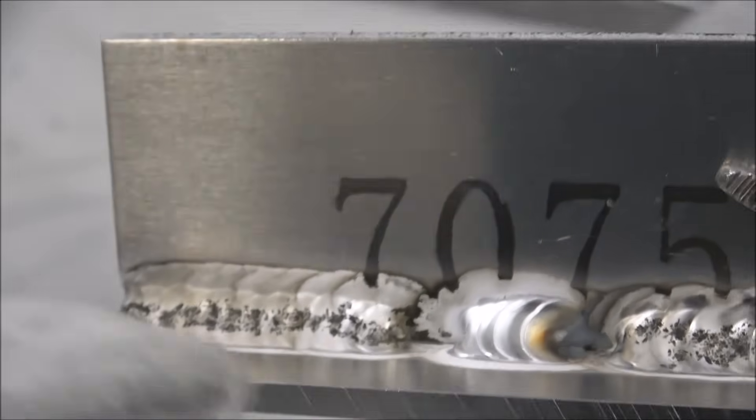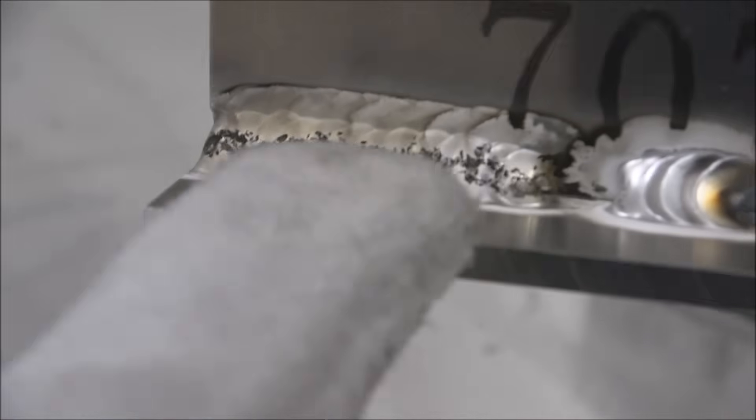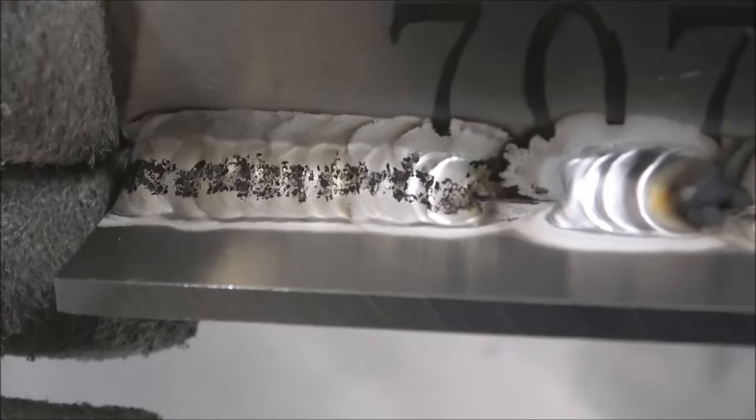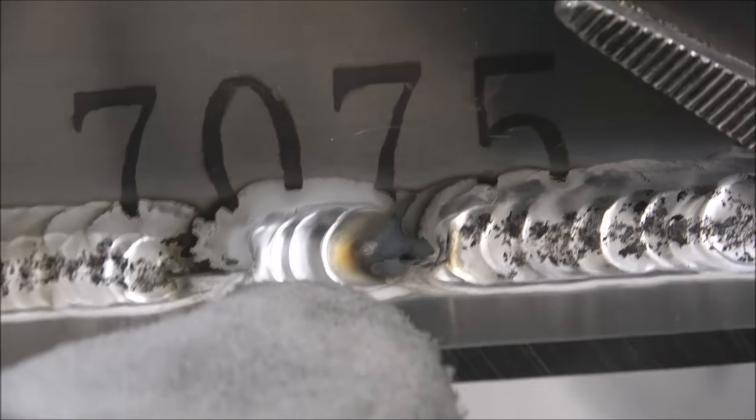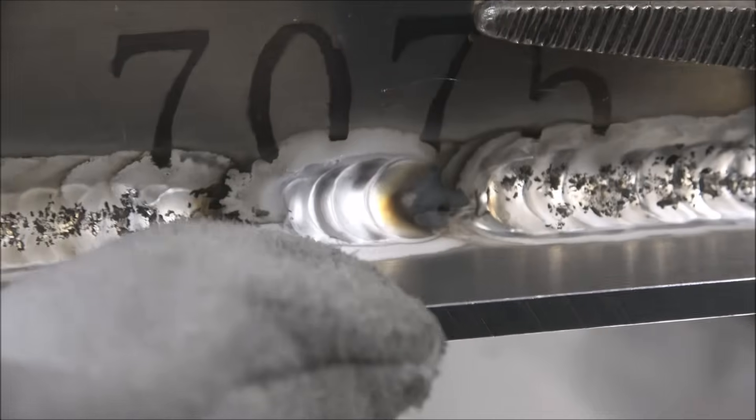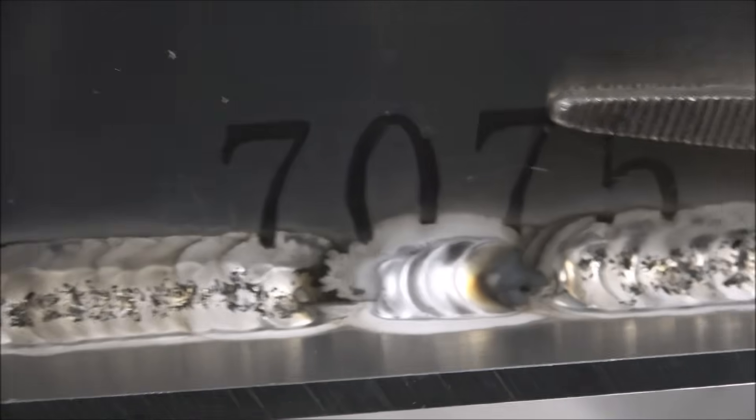Okay, first impressions. Pretty nasty looking stuff when you weld it. It leaves all those peppered marks on top. I even turned the wave balance up to try to clean that out. It didn't seem to help that much. Versus like a 5356 rod that looks nice and clean, but this stuff cracks really easy on 7075. It's not strong at all.